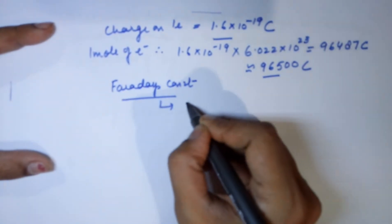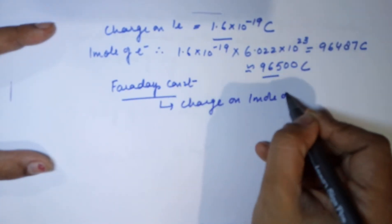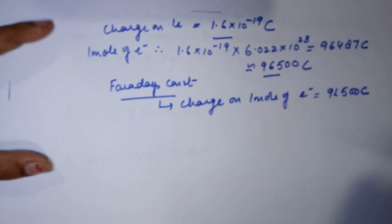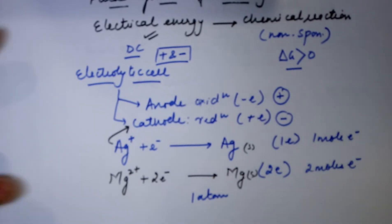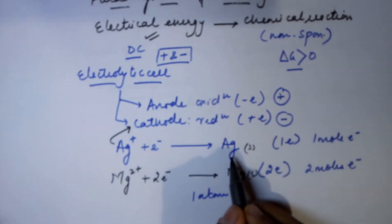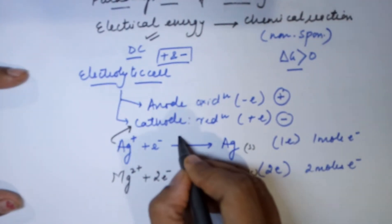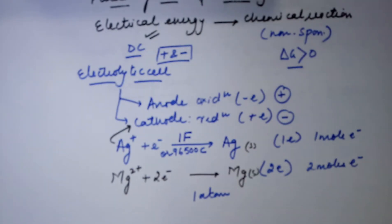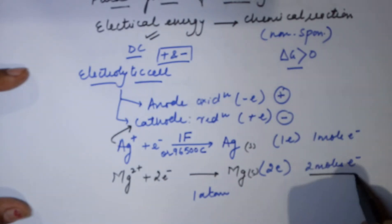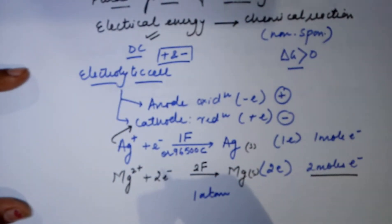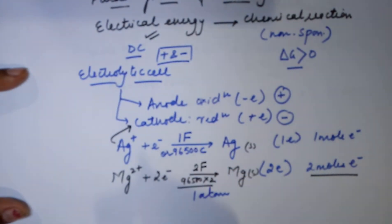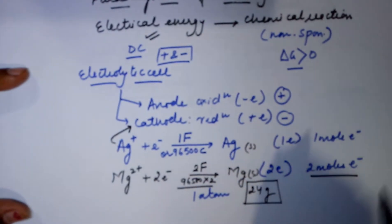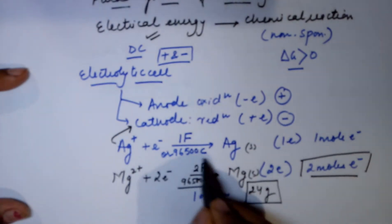So Faraday's constant is nothing but the charge on one mole of electrons — hence this value is 96,500 coulombs. Coming back to the previous examples: if I want one mole of silver deposited, I will require one Faraday, that is a charge of 96,500 coulombs. Similarly, to deposit one mole of magnesium I require two moles of electrons, so the charge required is two Faradays, or 96,500 × 2 coulombs — that is for 24 grams of magnesium, the requirement is two Faradays.